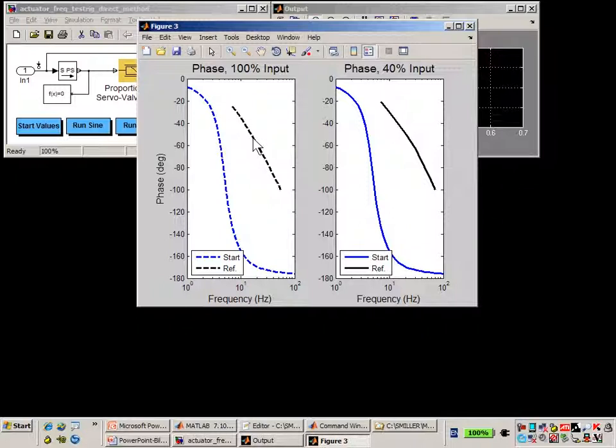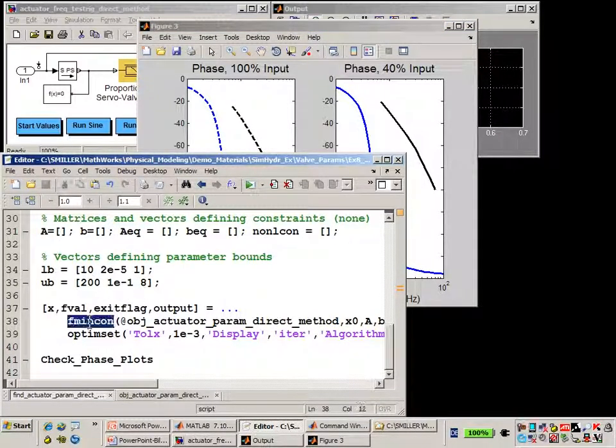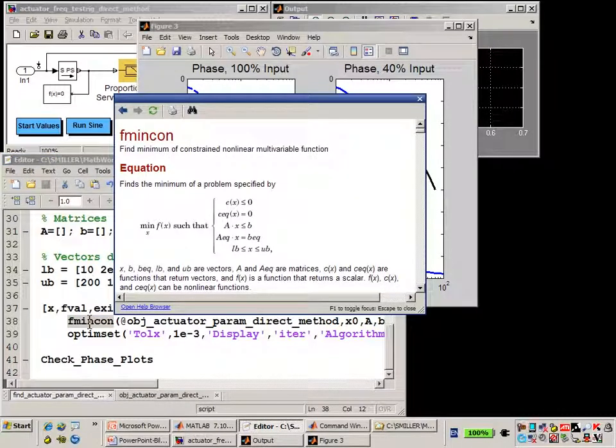Let's see how we've set up that optimization. In this MATLAB script, you can see that we're using the optimization algorithm fmincon. fmincon is in the optimization toolbox and can be used to optimize parameters. fmincon allows you to set up constraints on the parameter values. So we're going to do that.